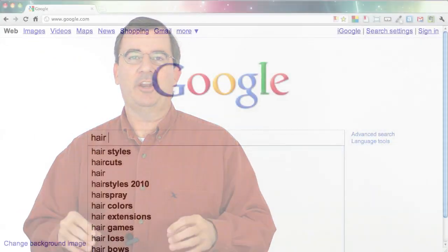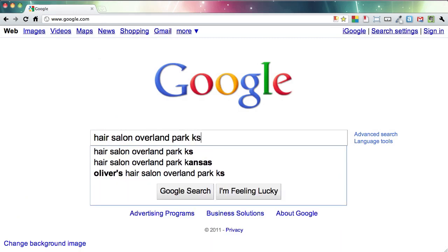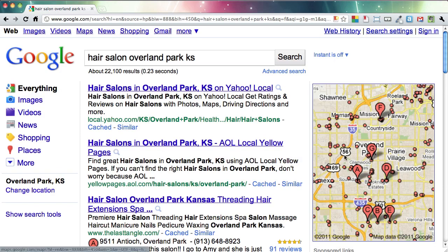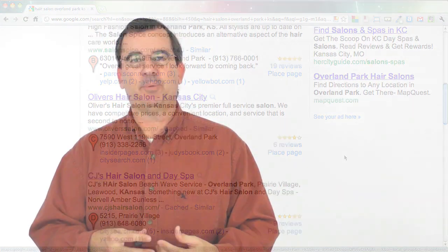When the user sits down and types into Google 'Hair Salon, Overland Park, Kansas,' it's really critical that my business shows up on the first page of Google when people are typing this in.